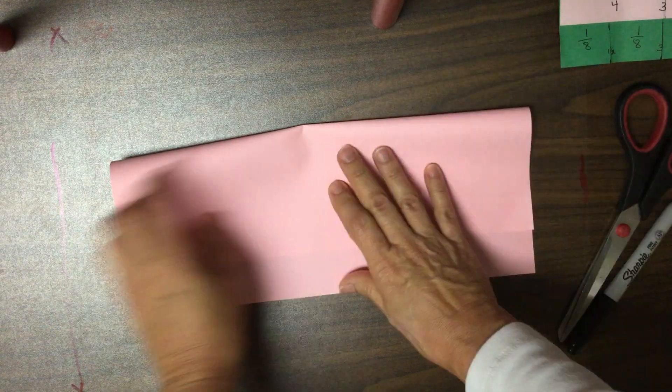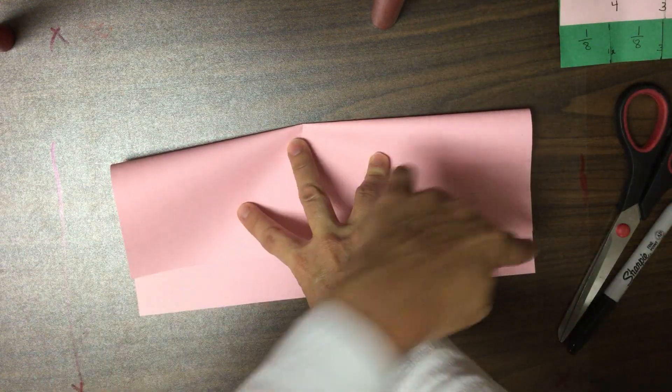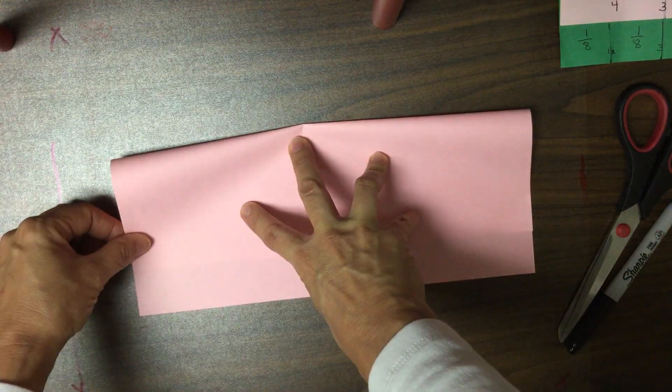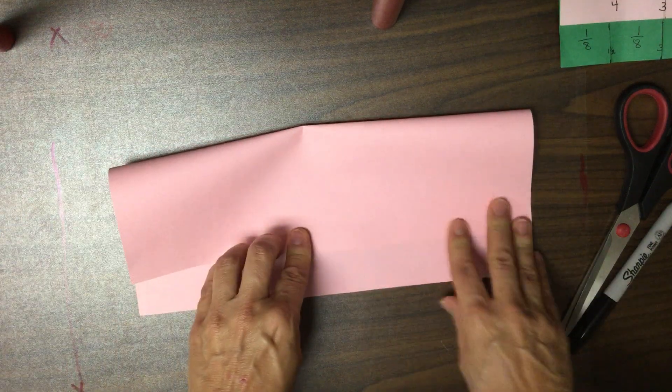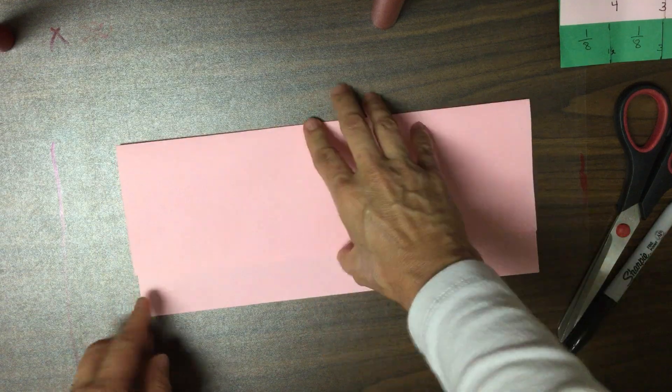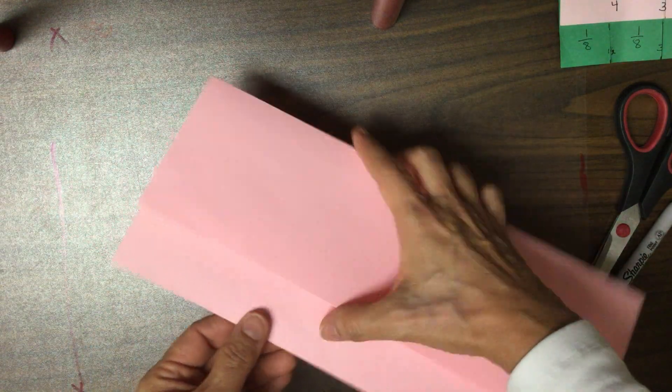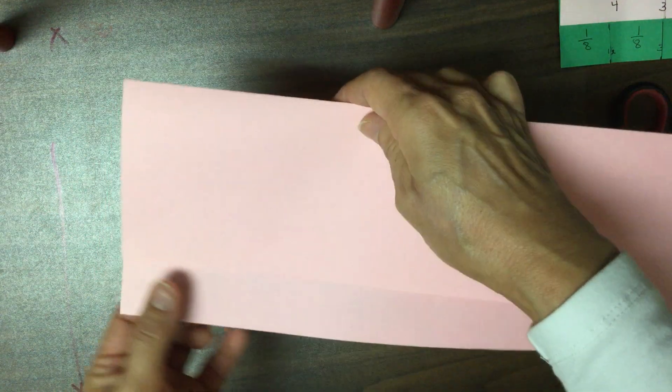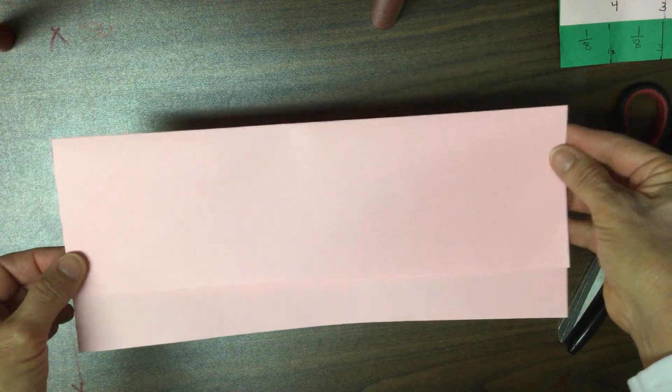When you fold it, you want to try to keep these edges as straight as you possibly can. Once you have those edges straight, start from the middle and crease out. As you can see it's not directly in half, you've got about an inch lip there.